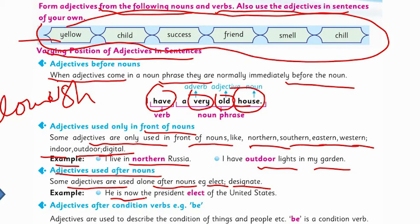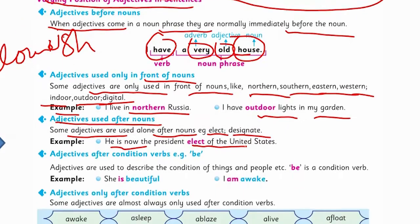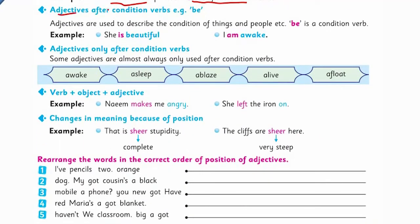Some adjectives are used alone after nouns — for example, 'elect' and 'designate.' For example: 'He is now the President-elect of the United States.' Adjectives after condition verbs — adjectives are used to describe the condition of things or people. 'Be' is a condition verb.